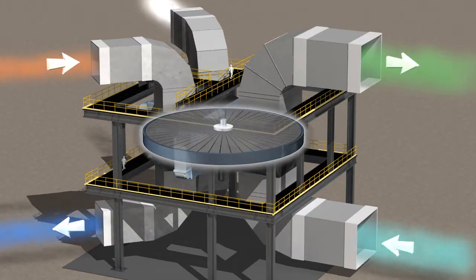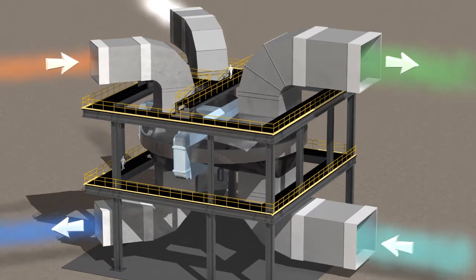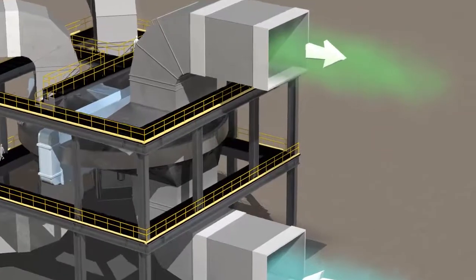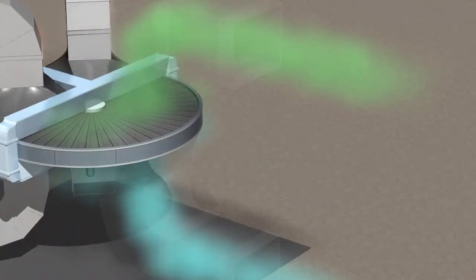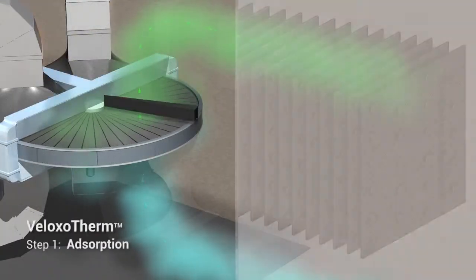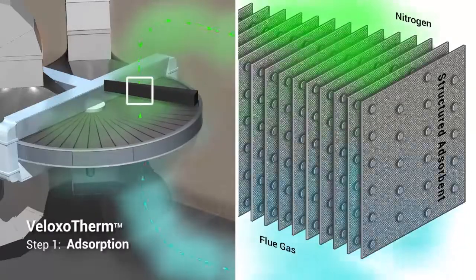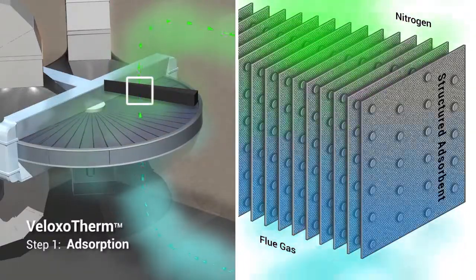Now, let's look closely at the Veloxytherm process, which consists of three basic steps. The process begins with the adsorption step, where CO2 is removed from the flue gas stream.